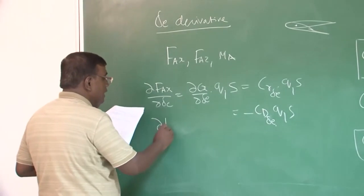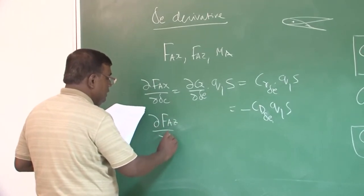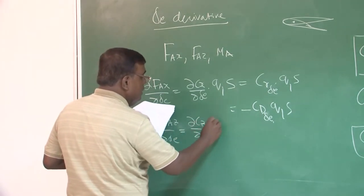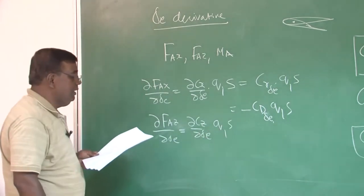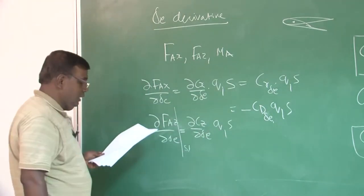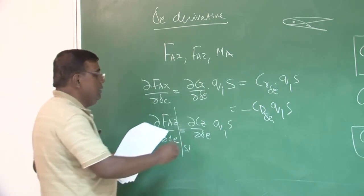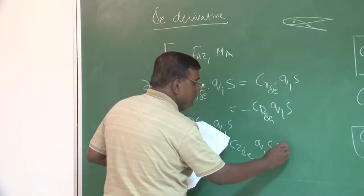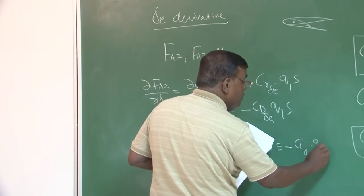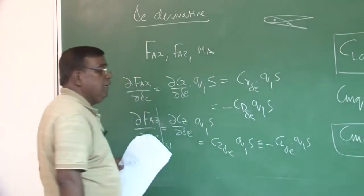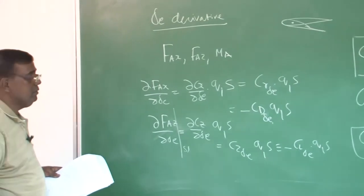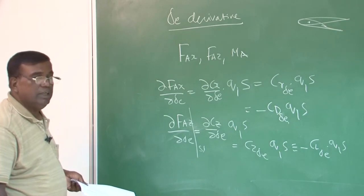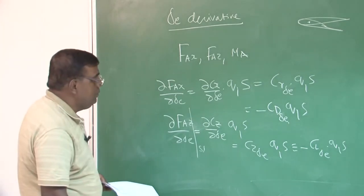Similarly, if I want to find DFAZ by D delta E, this will be DCZ by D delta E Q1 S. It goes without saying DFA1 means steady state, because these are to be evaluated at steady state and I am sure you understand, this is equal to CZ delta E into Q1 S and this is CZ delta E minus CZ delta E into Q1 S because CZ and CL are opposite sign for small perturbations. And what is CL delta E? You know, if I deflect elevator, how much it will generate CL, right. So, these are not very difficult thing.